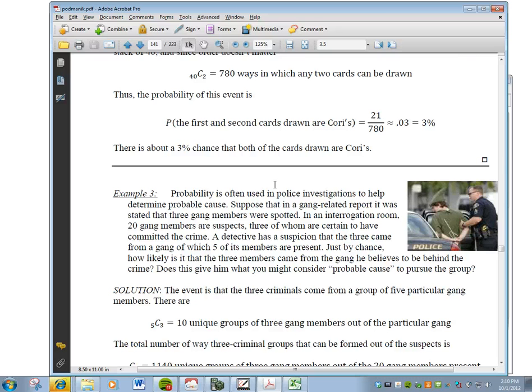A detective has a suspicion that the 3 came from a gang of 5, of which 5 of its members are present. Just by chance, how likely is it that the 3 members came from the gang he believes to be behind the crime? Does this give him what you might consider probable cause to pursue the group?